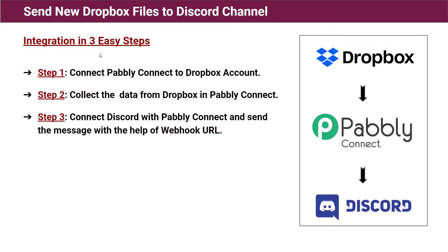Let me give you the easiest steps so you can make this automation yourself. There are three easy steps: Step one — connect Pabbly Connect to your Dropbox account. Step two — collect the data from Dropbox in Pabbly Connect. Step three — connect Discord with Pabbly Connect and send the message with the help of a webhook URL.